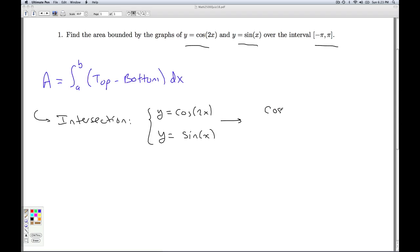In other words, I need to know where the cosine of 2x is equal to the sine of x. The immediate difficulty is what's inside the trig functions here. The argument of the trig functions are different. This is cosine of 2x, that's just sine of x. So I need to convert one of these into the form of the other, and I can do that with the cosine of 2x using a trig identity.